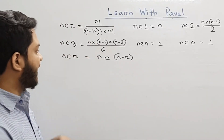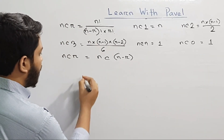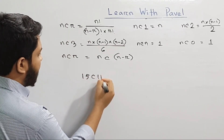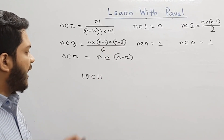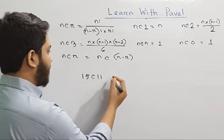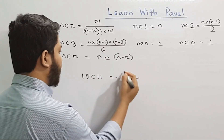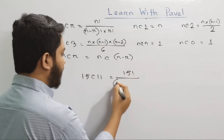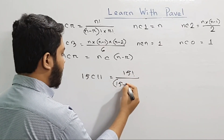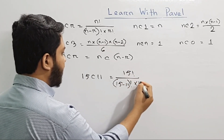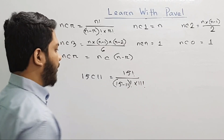The answer is 15C11. The answer is 15 factorial divided by 15 minus 11 factorial into 11 factorial.